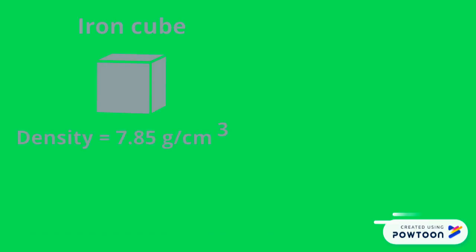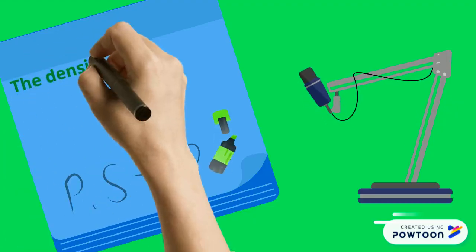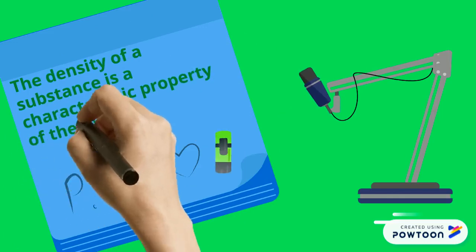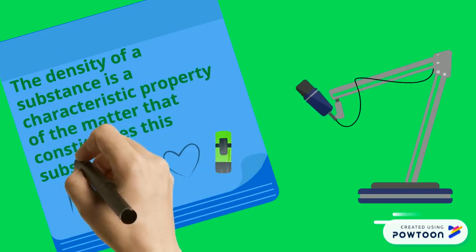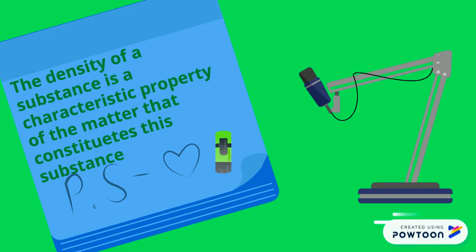Note that the density of the iron cube is 7.85 grams per centimeter cubed, while the density of the wooden cube is 0.5 grams per centimeter cubed. This means the iron cube is denser than the wooden cube. The density of a substance is a characteristic property of the matter that constitutes it — all objects made up of the same material have the same density.